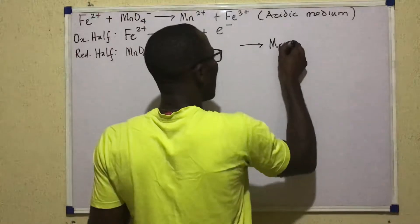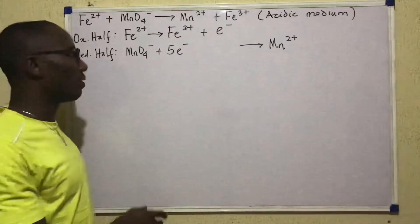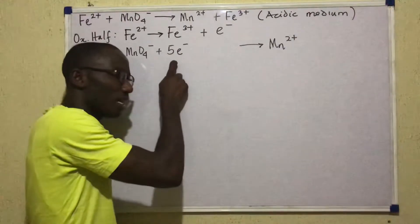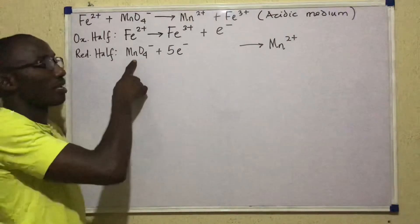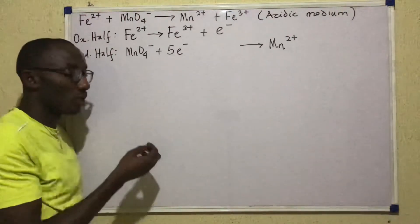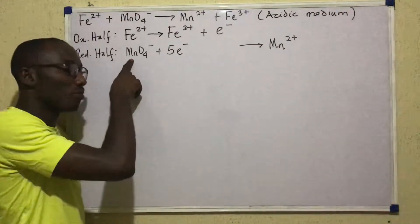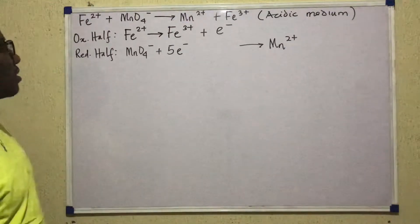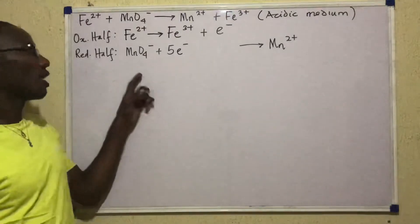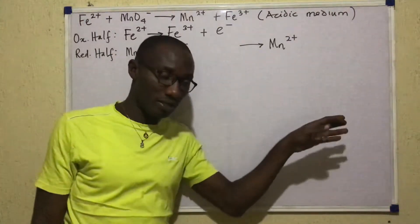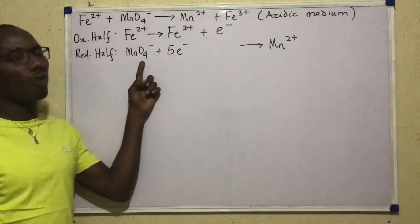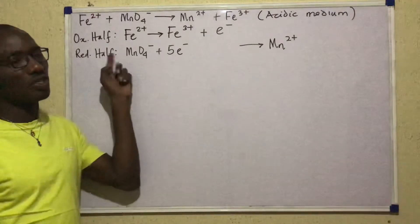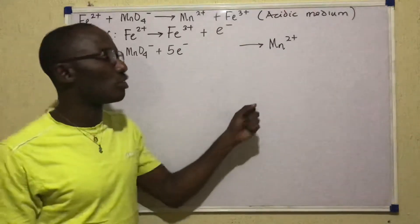So: MnO4− + 5e− → Mn2+. Manganese went from +7 to +2 due to the gain of 5 electrons. But am I satisfied with this reduction half? No. I have one manganese on the left and one on the right — manganese is fine. But on the left I have 4 oxygens and none on the right. There has to be a way of accounting for these oxygens on that side, and that is where you need to know your medium.